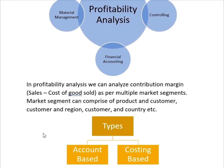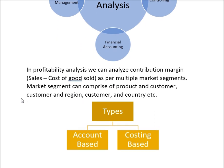In Profitability Analysis we can analyze contribution margin — that is, sales minus cost of goods sold — per multiple market segments. For example, we will determine the profitability of customer Usman in the Lahore region by deducting cost of goods sold from revenue. A market segment can comprise combinations like product and customer, so we can analyze the finished goods profitability for Usman.